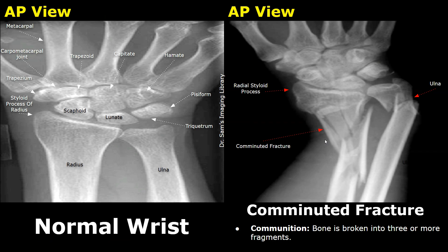Comminution refers to fragmentation. When the bone is broken into three or more fragments it is called a comminuted fracture. Here we can see multiple fracture lines in the radius with around four fragments. The ulna is also fractured.